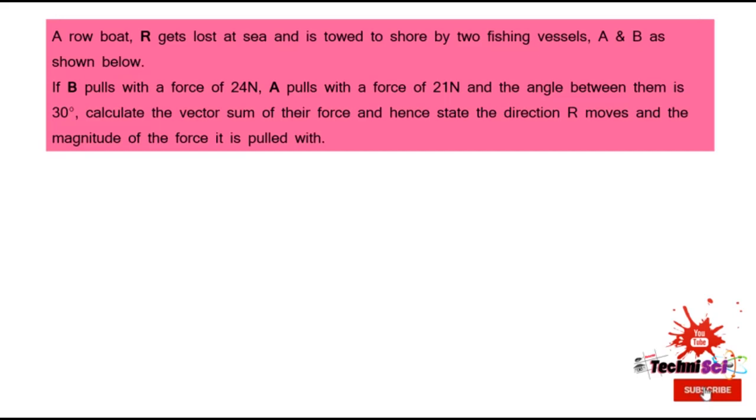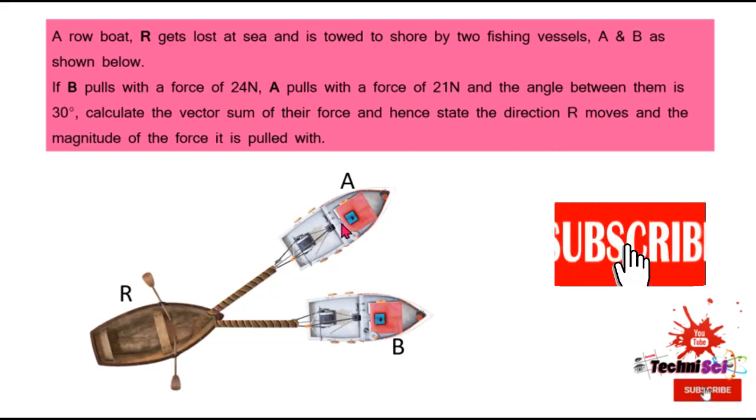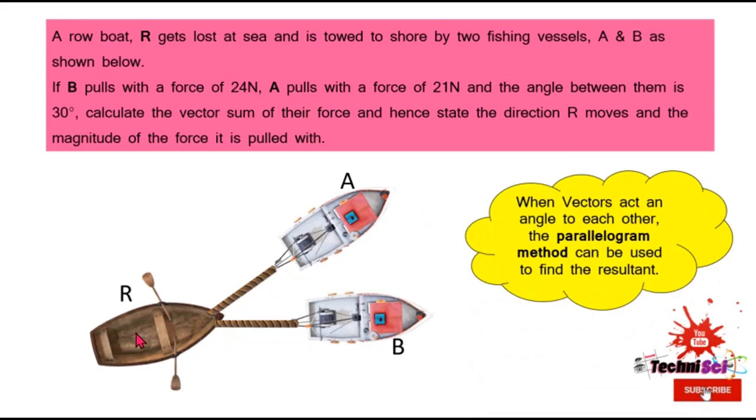So this question basically wants us to find the resultant, which you're seeing here, sum. Remember resultant is the sum of two or more vectors. And the direction, they're basically asking you to give the angle at which the resultant is acting. And the magnitude, basically you'll be doing some measurement to give the magnitude. So let's look at a diagram that is representing the question. Now remember once vectors are acting at an angle to each other, then the parallelogram method can be used to get your resultant.